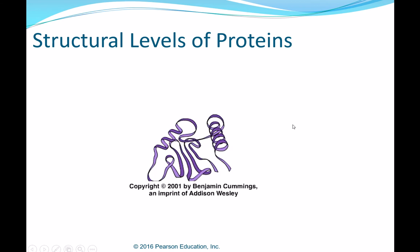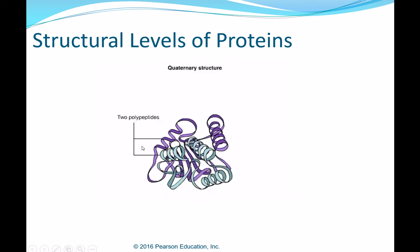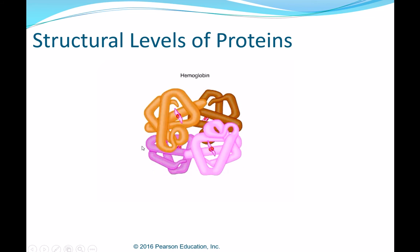The last structural level is quaternary structure. Some proteins consist of two or more polypeptide chains — quaternary structure results from the combination of two or more polypeptide subunits. It is stabilized by the same sorts of attractions that stabilize tertiary structure. Hemoglobin, the red oxygen-carrying protein of blood, is an example: it consists of two kinds of polypeptide chains, two of each, for a total of four chains per hemoglobin molecule.